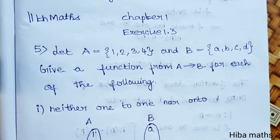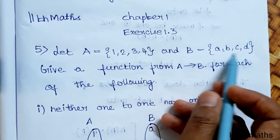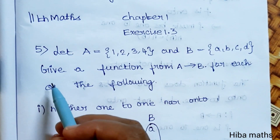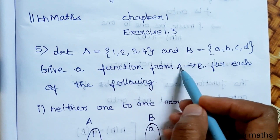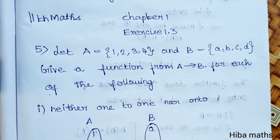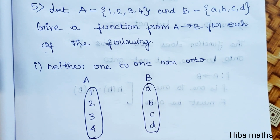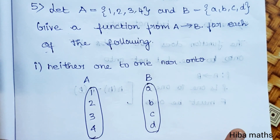Hello students, welcome to Hibamax. 11th standard math, Chapter 1, Exercise 1.3, 5th question. Let A = {1, 2, 3, 4} and B = {a, b, c, d}. Give a function from A to B for each of the following. We give 2 sets, 4 subdivisions, and a function from A to B.